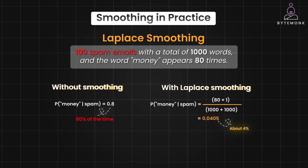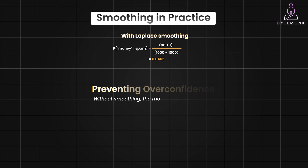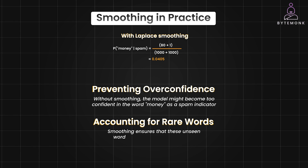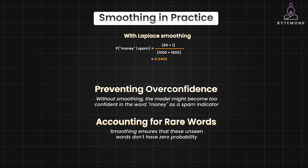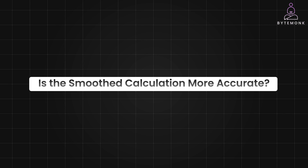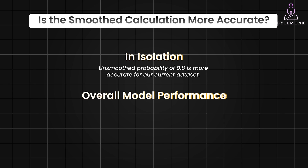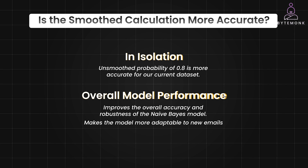The drastic change in probability with smoothing might seem counterintuitive, but here is why it's important. Without smoothing, the model might become too confident in the word 'money' as a spam indicator — it might incorrectly classify a legitimate email like a message from your bank as spam just because it mentions 'money.' In this example, our vocabulary has 1,000 words, but we have only seen 100 spam emails, so many words in our vocabulary may not have appeared in the spam emails yet. Smoothing ensures these unseen words don't have zero probability, allowing the model to still consider them in future classifications. Whether the smoothed calculation is more accurate depends: in isolation for the word 'money,' the unsmoothed probability is more accurate for the current dataset, but smoothing typically improves the overall accuracy and robustness of the Naive Bayes model, helping prevent overfitting and making the model more adaptable to new emails with previously unseen words.